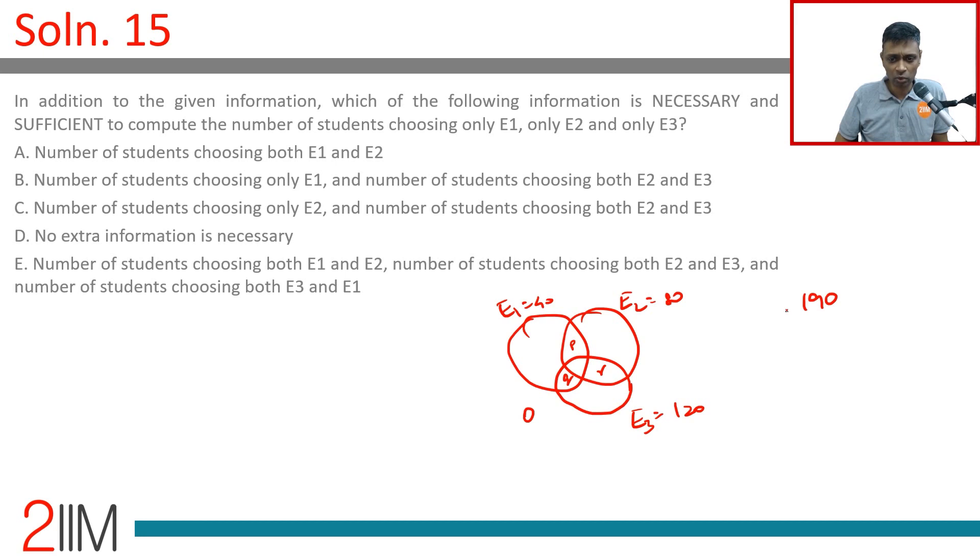Let's think about this. E1 is 40, E2 is 80, E3 is 120, total is 190. Number of students choosing both E1 and E2, suppose this number were given to be 20, for argument's sake. We can write this is 20 minus q, this is 60 minus r. We know q plus r is 30, and maybe we can figure out something from there.